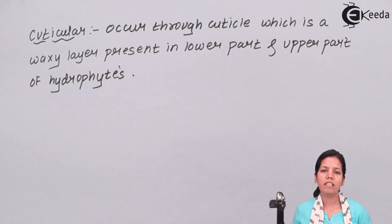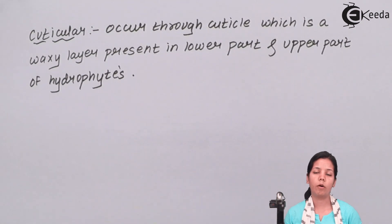Students, in this part of the chapter, we have studied about transpiration and the three different parts, or you can say forms, of transpiration: stomatal, cuticular, and lenticular. I hope we all are clear with the concept of transpiration and its types. Thank you.